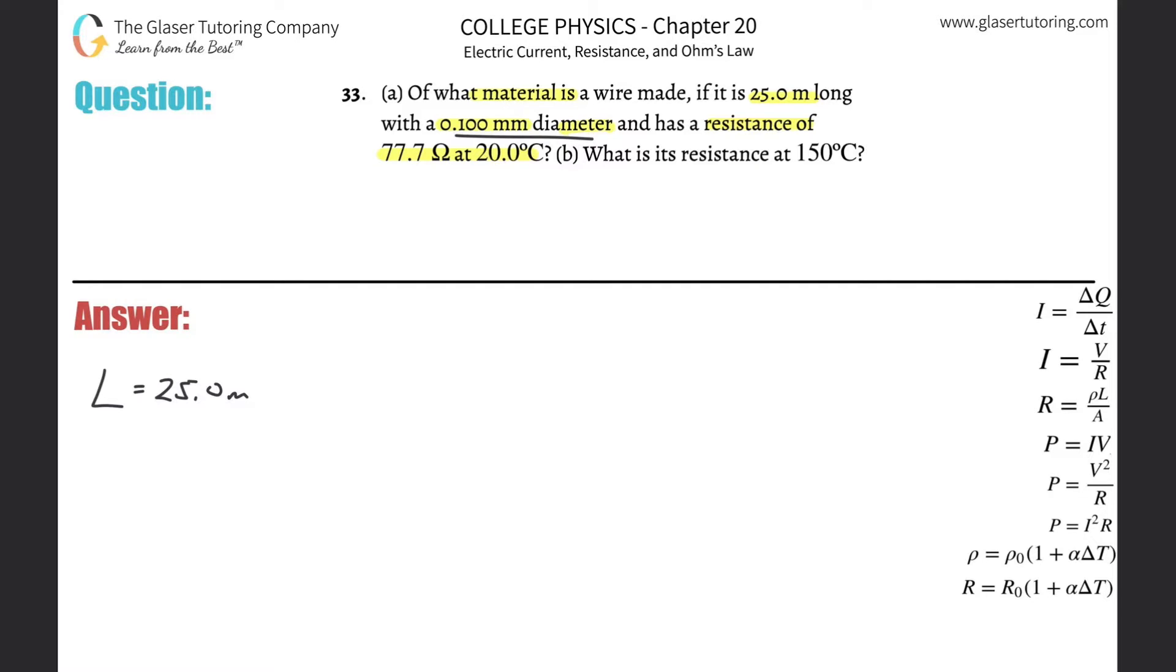They're also telling us a diameter. We remember from other questions that if they're telling us a diameter, we'll probably need an area. So let's keep in mind that the diameter here is 0.100 millimeters. First issue, it's in millimeters, so we need that in meters. We multiply that by 1 over 1,000, or multiply by 10 to the minus 3. That would be in meters.